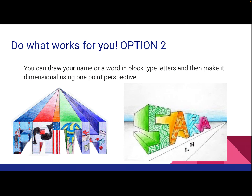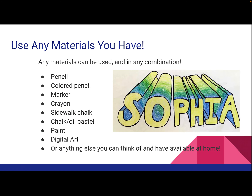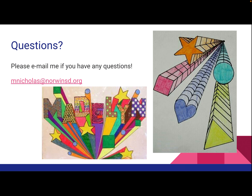Here are some examples of what I'm talking about. You can see there are cubes, cylinders, stars, and hearts — we're basically turning flat shapes into 3D forms, making the illusion that they are three-dimensional using the trick of one-point perspective.